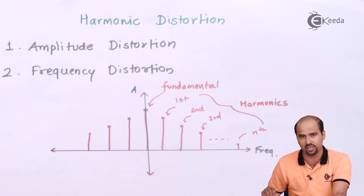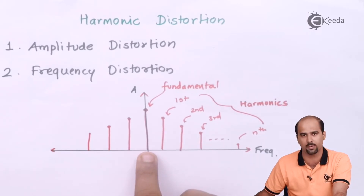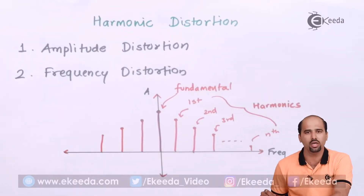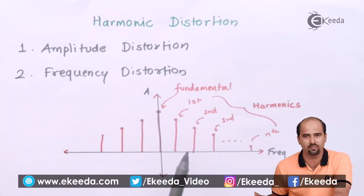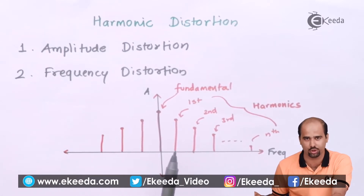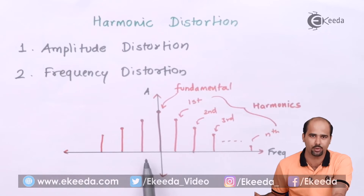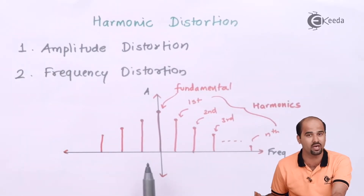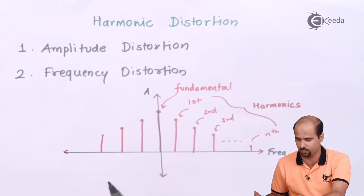As you are looking in this particular diagram, I am talking about the first fundamental frequency, second fundamental frequency, third fundamental frequency, and so on. Here we are talking about frequency distortion — for all the frequencies, I am not getting the same amplitude. That is nothing but frequency distortion, and how we can avoid that we will study later on.